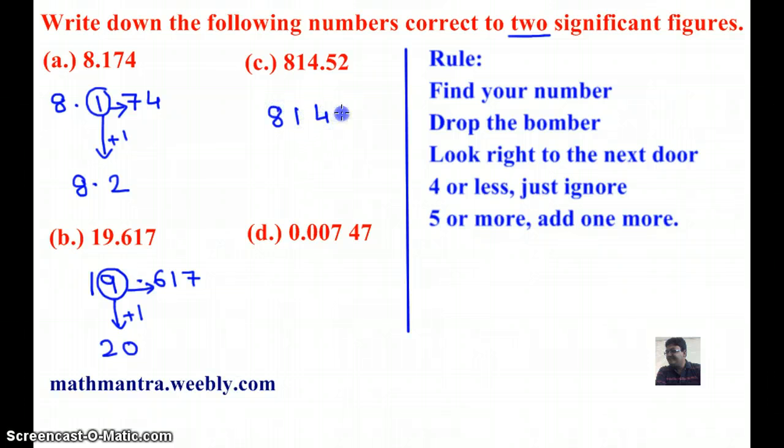Next, 814.52. The first significant figure is 8 and the second significant figure is 1. And the next number is 4, and according to the rule, 4 or less, just ignore. So I am going to write 8, 1 as it is and the remaining places I just have to write 0s. My answer is 810 because after decimal there is no point writing 0s.